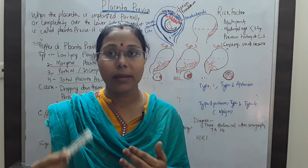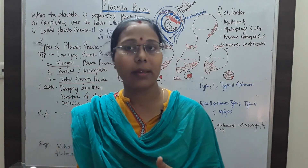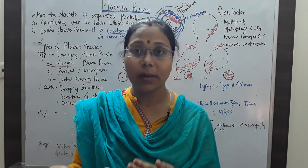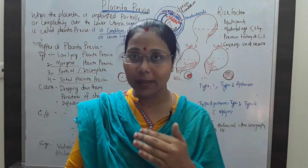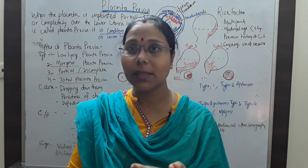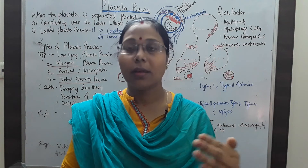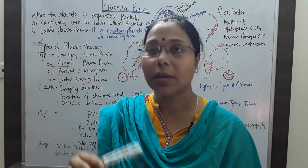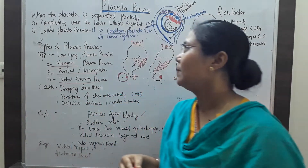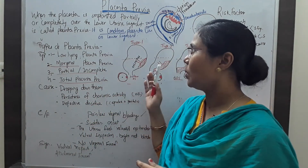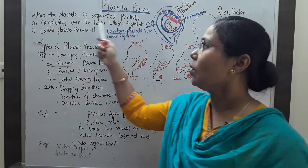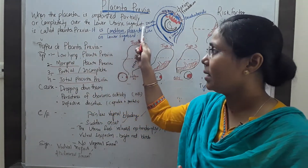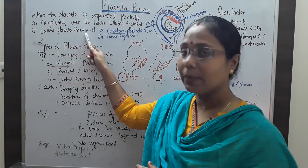So what is placenta previa? The name is indicating the normal positioning of the placenta. The placenta that is present in front of the internal os or the cervix is named as placenta previa. The definition tells that when the placenta is implanted partially or completely over the lower uterine segment, this is called placenta previa.